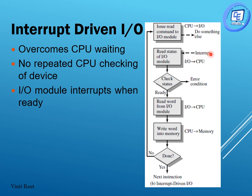The IO module issues an interrupt to the CPU, and the CPU checks the status of the IO module at the end of each instruction cycle. If any error condition is there, the error is reported. If the IO module is not ready, it continues with its other work. If the IO module is ready, the CPU reads a word from the IO module, and the IO module places the word onto the data lines. After that, CPU performs a write operation to the memory. It checks whether the data transfer is completely done — if no, it issues another read command; if yes, it goes to the next instruction.